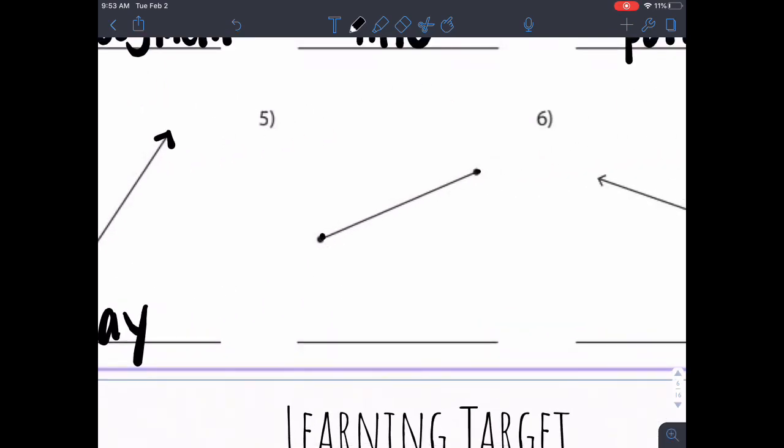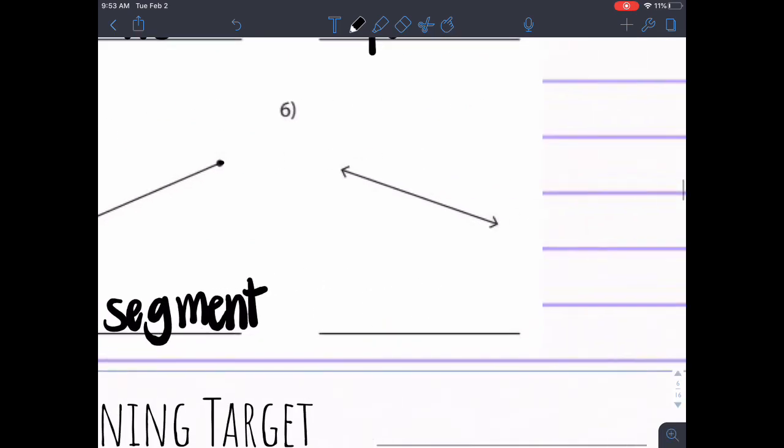Here, I have two end points. I know that's a line segment. And then, once again, oh, arrow, arrow. That is a line.